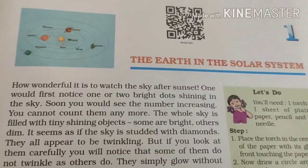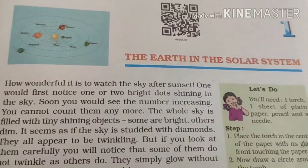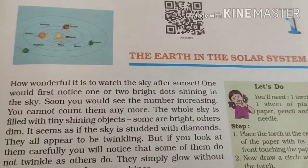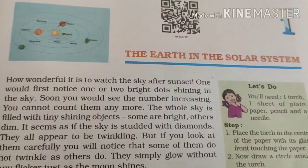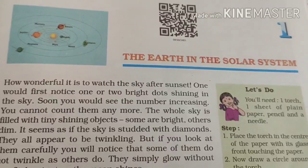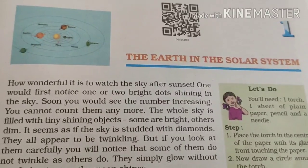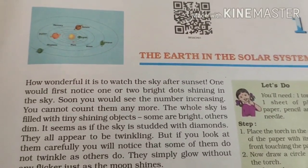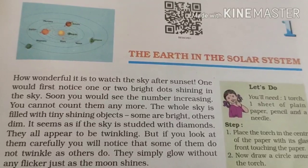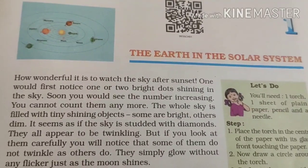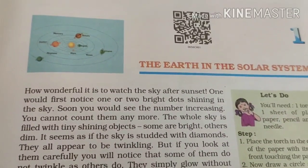Today we are going to discuss lesson one: The Earth in the Solar System, from the NCERT book standard six. When the night sky is fully lit up and we can see the full size of the moon, that is called Purnima or full moon day. Just after 15 days, when no moon is visible in the sky, that is called Amavasya or new moon day.